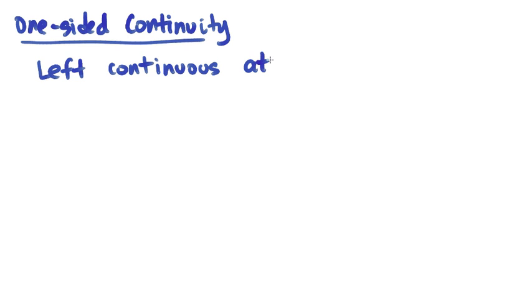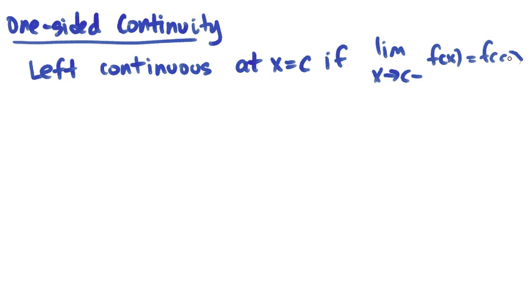x equals c, if the limit as x approaches c from the left gives you the value that you're looking for, and it is right continuous if the same thing happens, but from the other direction.